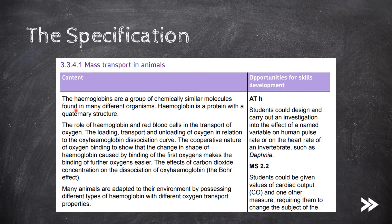Then we'll move on to how exactly haemoglobin transports oxygen in the bloodstream, as well as the oxyhaemoglobin dissociation curve. We'll also look at the effect of carbon dioxide concentration on the dissociation of oxyhaemoglobin, known as the Bohr effect, and the presence of different types of haemoglobin in animals living in different environments.